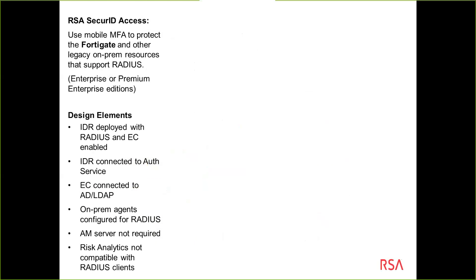Let's first get into some of the components in SecureID Access. The components I'm leveraging today are going to need at least the enterprise or premium editions to work. When you get the enterprise or premium edition, it comes with a cloud service that hosts an admin console for SecureID Access to do your cloud authentication. We're going to be focused only today on the authentication service — not risk analytics and single sign-on policy. I did show that in one of my other videos, so I'll put a link in here so you can go back and watch that.